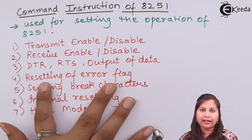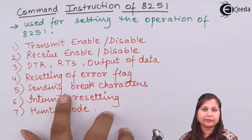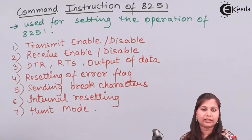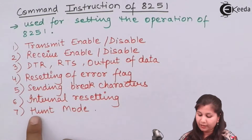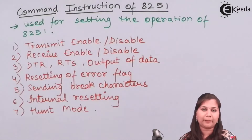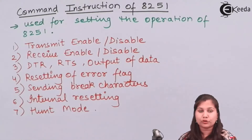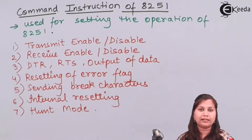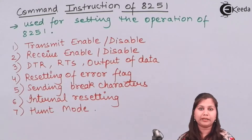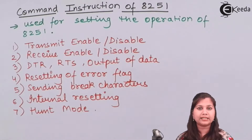Resetting of the error flag can also be done, sending break characters is also decided by the command instruction, internal resetting of the 8251 can also be done through it, and whether the 8251 is working in the hunt mode or not — enabling and disabling of the hunt mode — can be done through the command instruction. Since it is a control word, it will be written in the control register which is an 8-bit register, so there will be 8 bits in this command instruction.